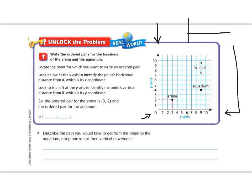Let's begin by reading the unlock the problem. It says, write the ordered pairs for the locations of the arena and the aquarium. Locate the point for which you want to write an ordered pair. Look below at the x-axis to identify the point's horizontal distance from 0. The first thing we are looking for is the arena. So the arena is right here, and we are going to go down the runway like an airplane first. We're going to go down the x-axis until we get to the arena, and that's 3. Then, like an airplane, we're going to rise up into the air to where the arena is, and that's 2. So the ordered pair for the arena is 3, comma, 2, because I went 3 down the x-axis, and then 2 up the y-axis.